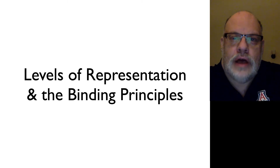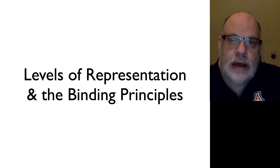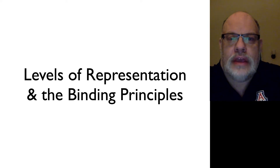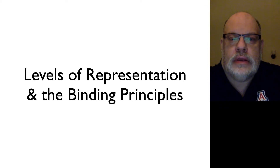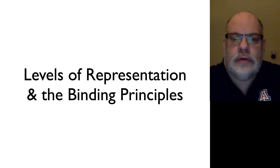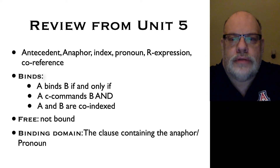Now, since Chapter 5, we've added a lot of theory. We've added things like levels of representation — things like D-structure, spell-out, LF, and PF — and it's worth thinking about how the binding principles interact with the operations that map between these different levels of representation, like the movement rules. So in order to start this discussion, let's first do a quick review of the binding theory from Unit 5.